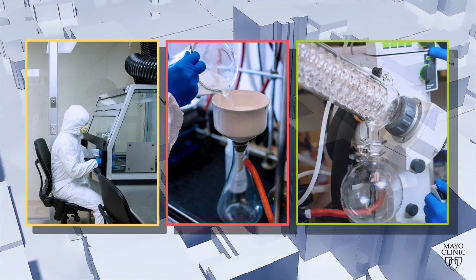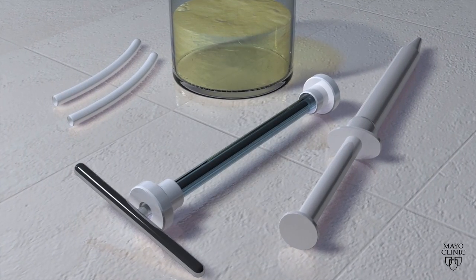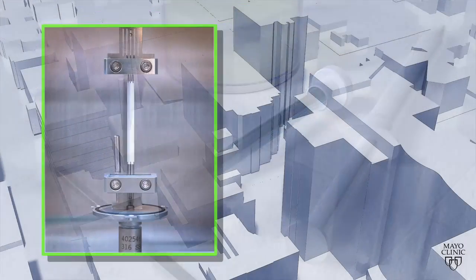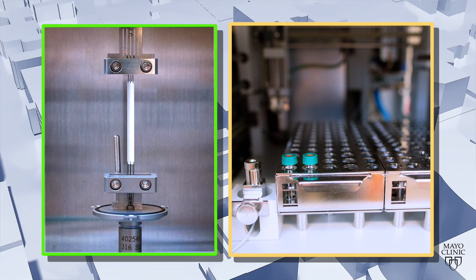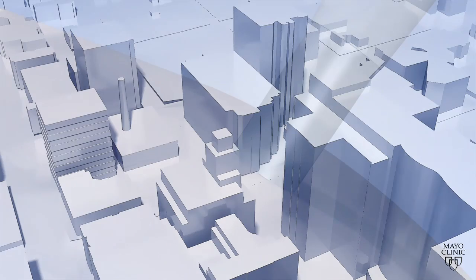A nerve scaffold that will support axon growth is fabricated in the biomaterials clean room from a novel biodegradable polymer. It is tested for tensile strength and biodegradability. In the future, cells will be added to the scaffold to repair long nerve gaps.